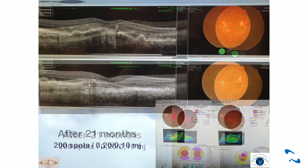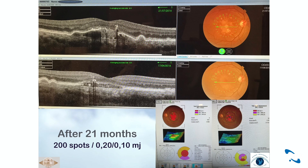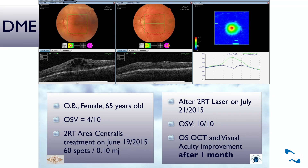Anche sull'altro occhio, dopo 21 mesi, si vede come la macula si è ripresa e le druse sono andate via: al centro, prima giallo, adesso è tornato arancione rosato. Il laser non è stato usato solo per la maculopatia: un caso di edema diabetico in cui il paziente vedeva a 4 decimi è stato trattato con 60 spot con questa macchina. Dopo un mese è tornato a 10 decimi, e si vede come si è abbassata la zona di edema, cioè di liquido, che innalzava la macula.